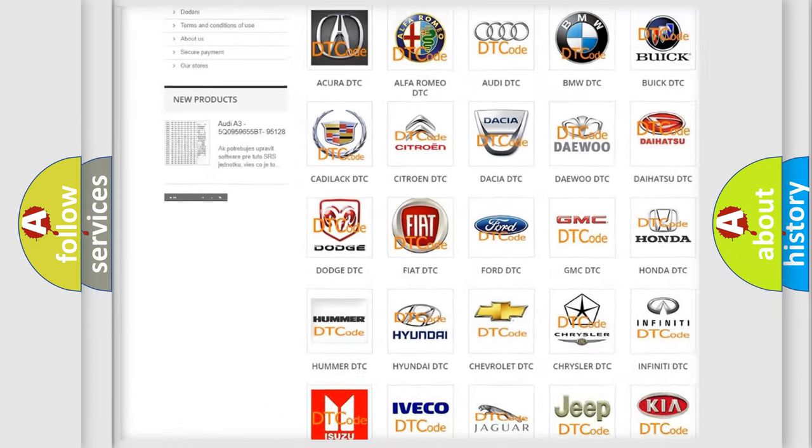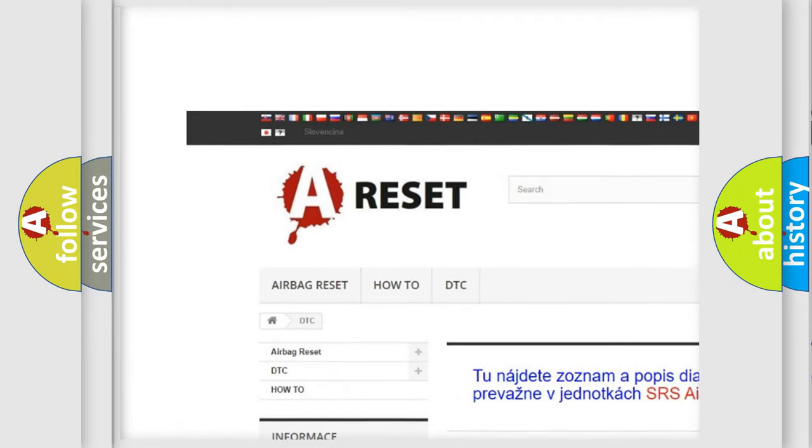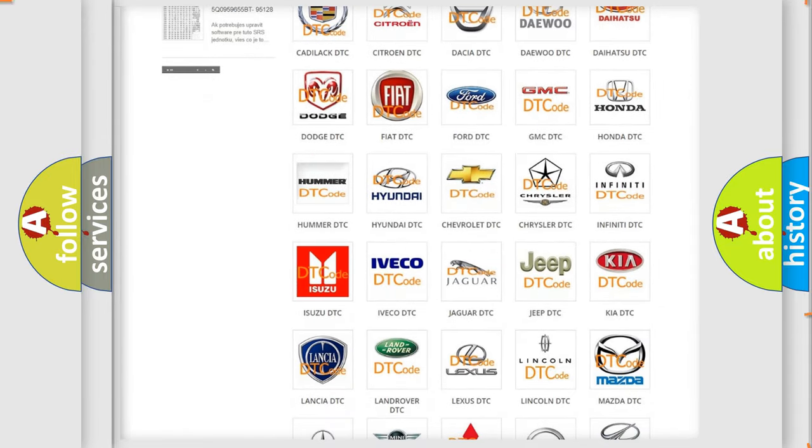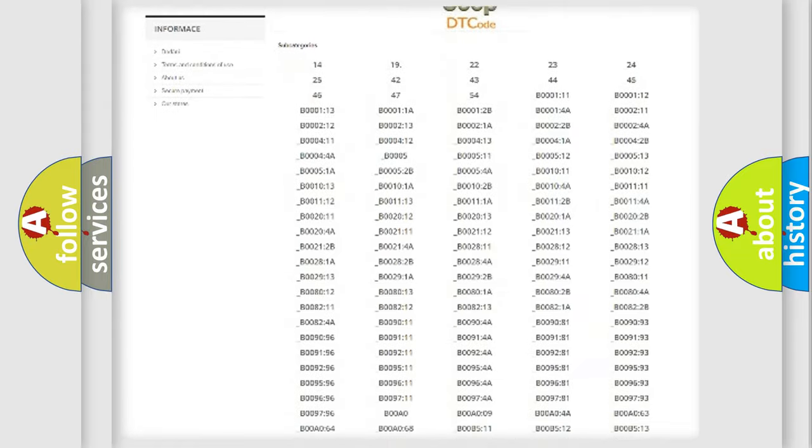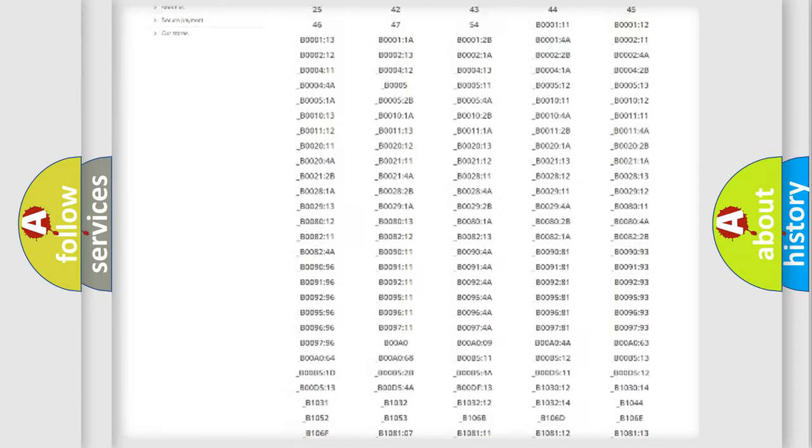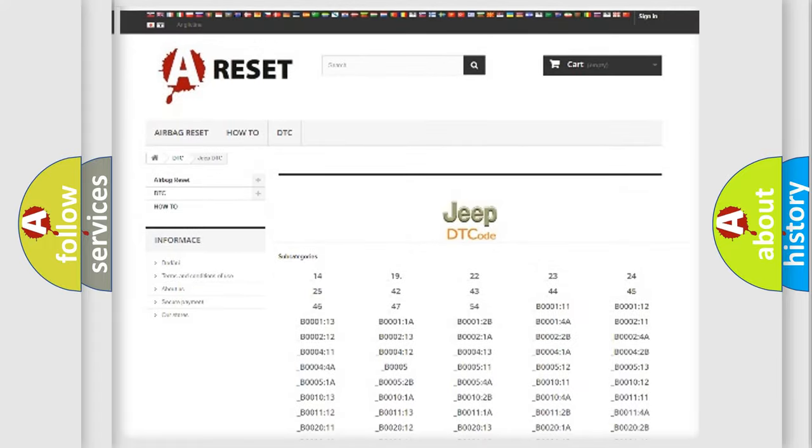Our website airbagreset.sk produces useful videos for you. You do not have to go through the OBD2 protocol anymore to know how to troubleshoot any car breakdown. You will find all the diagnostic codes that can be diagnosed in Jeep vehicles, and also many other useful things.